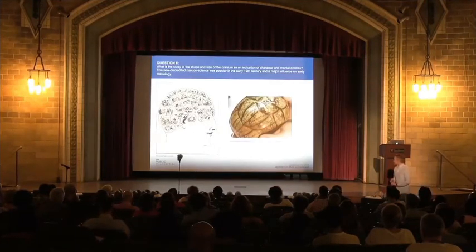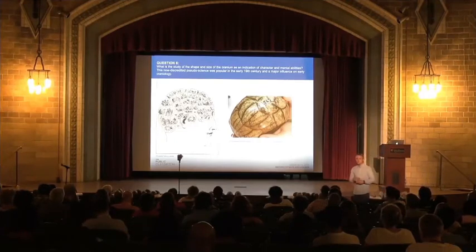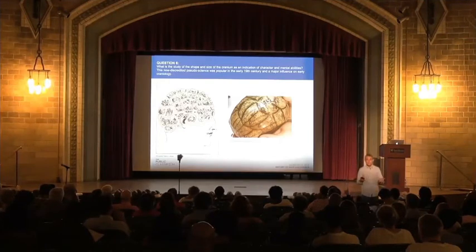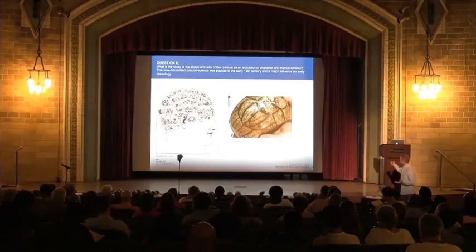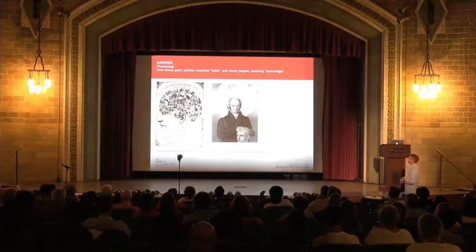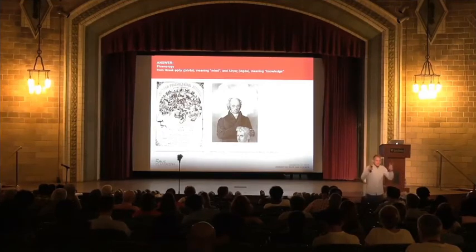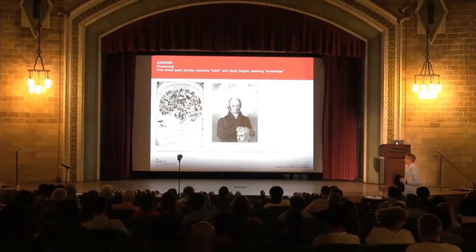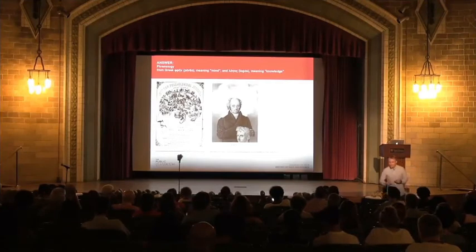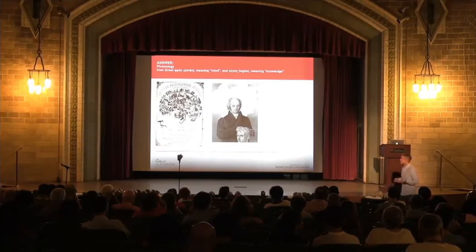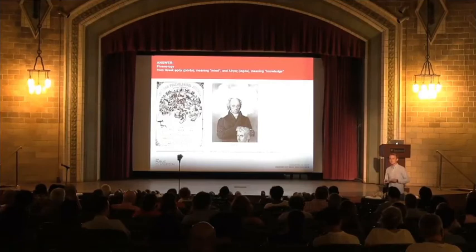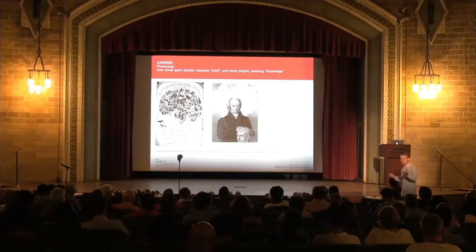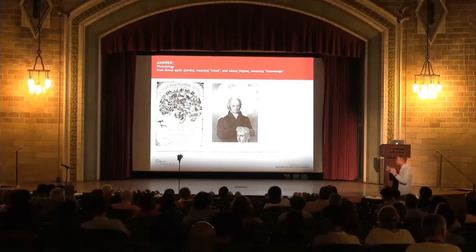What is the study of the shape and size of the cranium as an indication of character and mental abilities? This now-discredited pseudoscience was popular in the early 19th century and was a major influence on early craniology. Phrenology — it's Greek and means the study of the mind — was pioneered by a German named Franz Josef Gall, who developed this science to determine deviant character traits in criminals. It's an interesting case study in the history of science: although basically wrong, they came up with some interesting first ideas, including that certain parts of the brain did particular things — what's sometimes called neural localization of brain function.